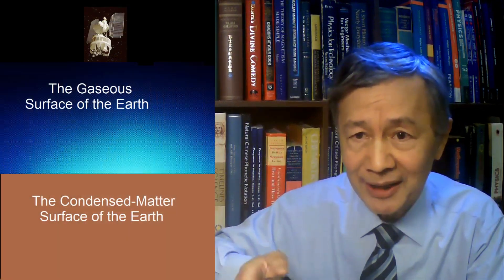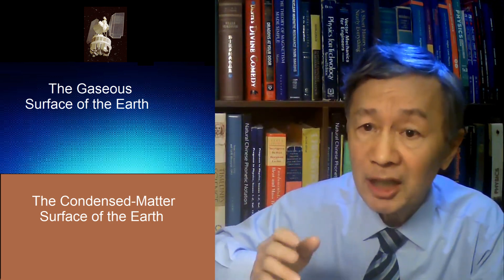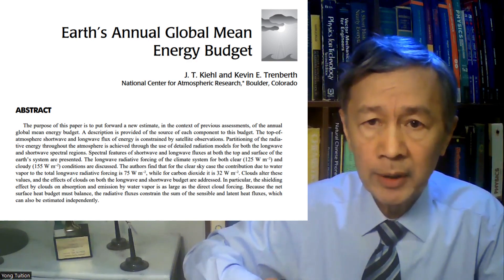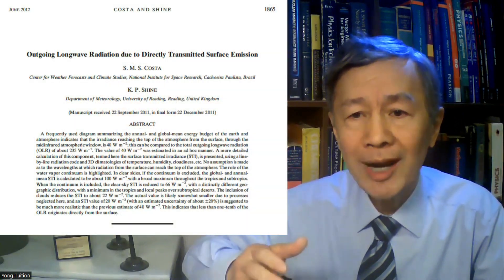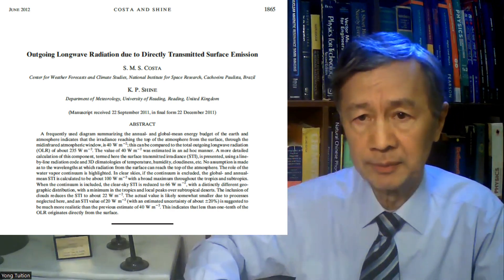That is the infrared source, but without a well-defined upper boundary. This is not a big deal. In the absence of the so-called surface emission, the condensed matter surface would become much more stable in keeping its global mean temperature with the air. To justify my argument, I would like to use two relevant papers: one by Kiel and Trembath in 1997, in which the earnest global energy budget diagram was proposed; another by Costa and Shine in 2012, who theoretically calculated the outgoing long-wave radiation due to directly transmitted surface emission.